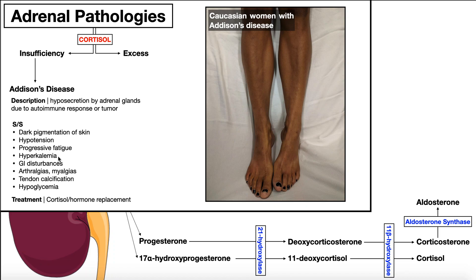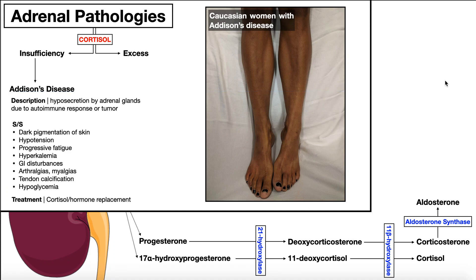We also have hyperkalemia — an excessively high potassium level in the blood. Because the synthesis pathways for cortisol and aldosterone share many of the same enzymes, a deficiency that leads to low cortisol will probably also cause a deficiency of aldosterone. Aldosterone normally triggers the secretion and excretion of excess potassium, lowering blood potassium. Without aldosterone, potassium builds up in the blood, which is why we see hyperkalemia in Addison's disease.